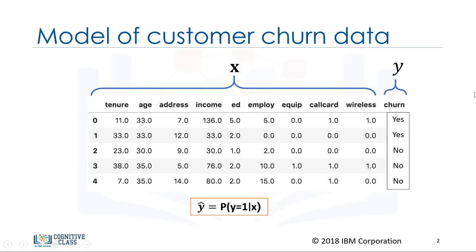Let's look at the telecommunication dataset again. The goal of logistic regression is to build a model to predict the class of each customer, and also the probability of each sample belonging to a class. Ideally, we want to build a model, y hat, that can estimate that the class of a customer is 1 given its features x.